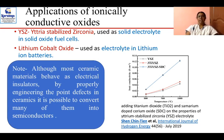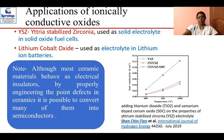If you take an insulator and engineer it by incorporating defects — adding a dopant or engineering existing point defects — you can shift the band gap position, that is, the conduction and valence band positions, thus converting the insulator into a semiconducting-type material.